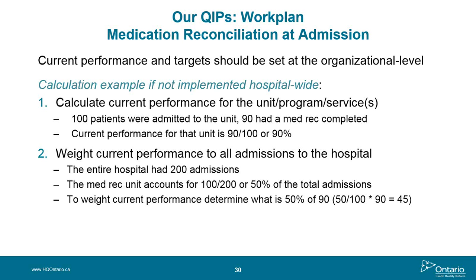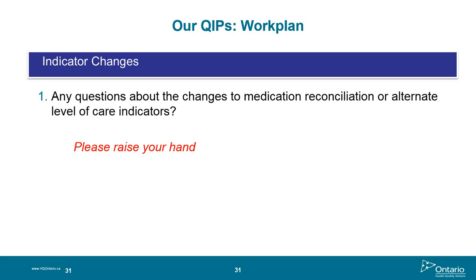Regarding the ALC indicator change: this year you can choose to keep it the way it is. The change is that the current way we look at ALC is just acute ALC in your hospital, but the hospital service accountability agreements are switching to the more fulsome indicator using wait times information system data, which includes not only acute ALC but rehab and other areas. That will be a requirement starting in 2016-17. There will be further information in a frequently asked questions document that HQO will circulate and post on the Navigator.